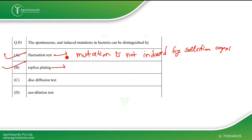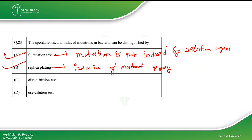Replica plating is the standard approach for isolating mutants — a library of mutagenized bacteria is plated on a control plate and on a plate with a sub-inhibitory concentration of an antibiotic. Colonies that grow on the control plate but not on the antibiotic plate are identified as mutants. The correct answers are Option A (fluctuation test) and Option B (replica plating).